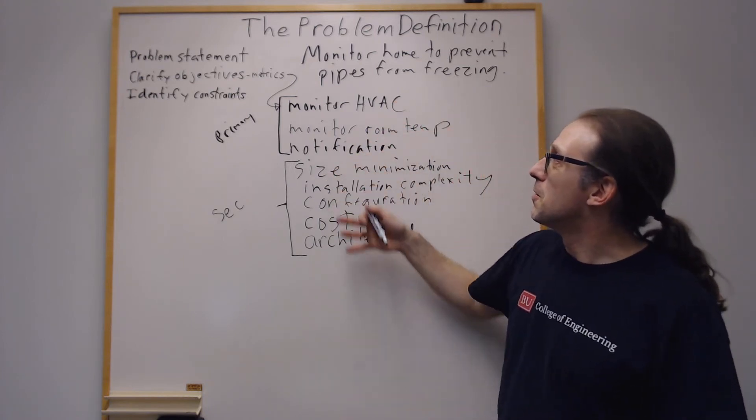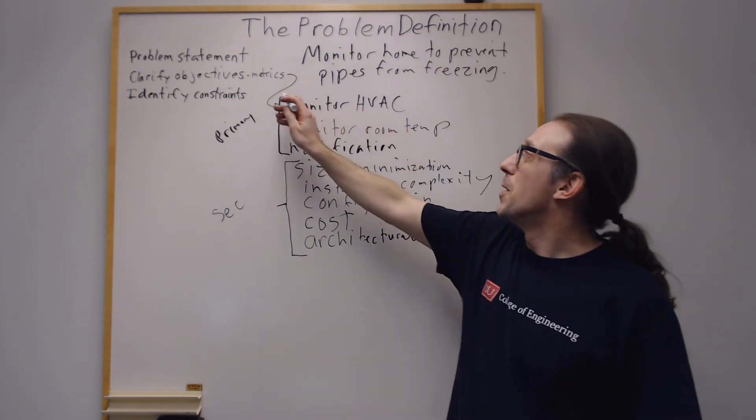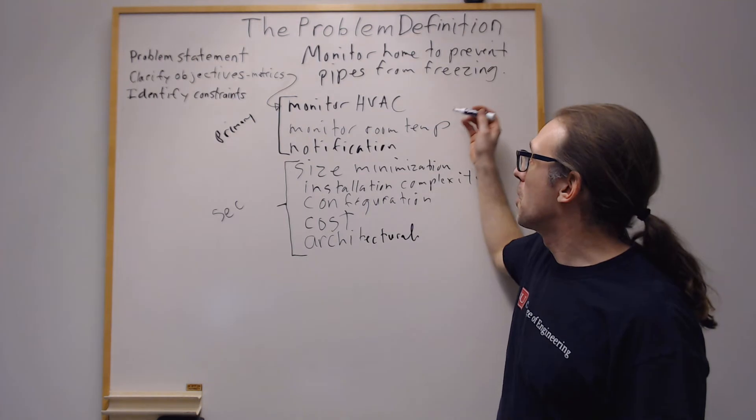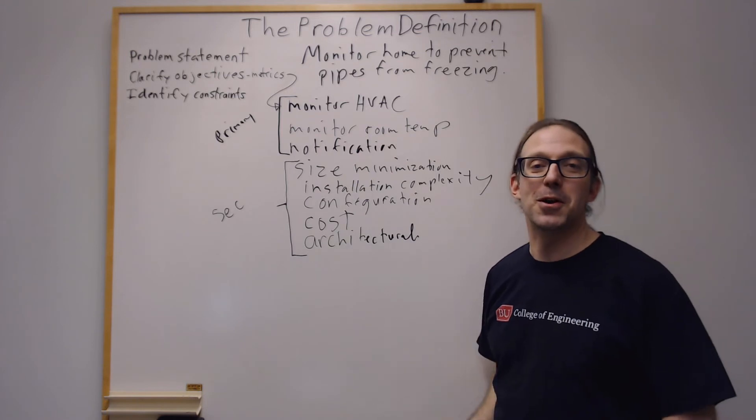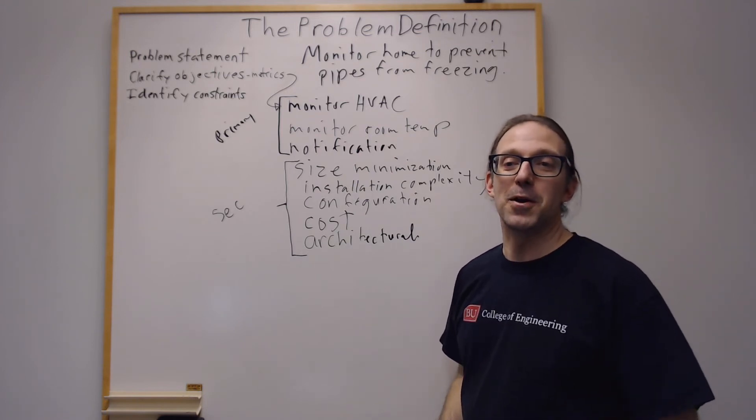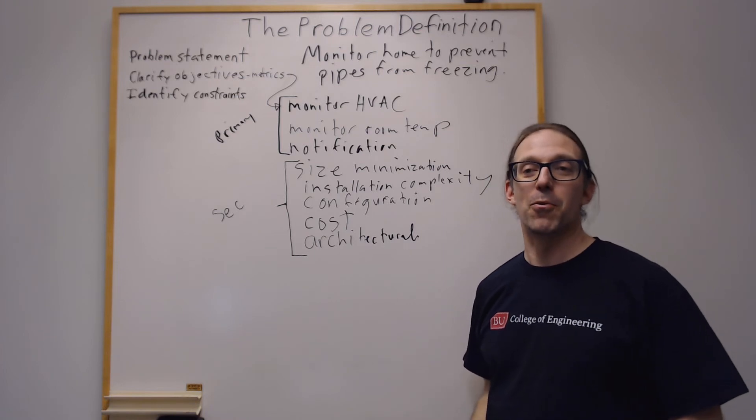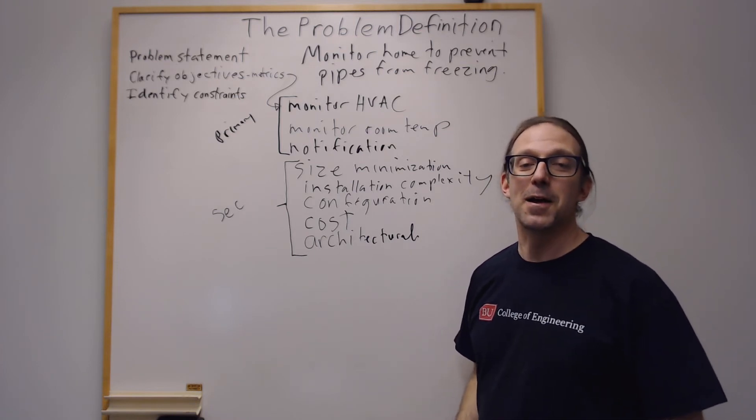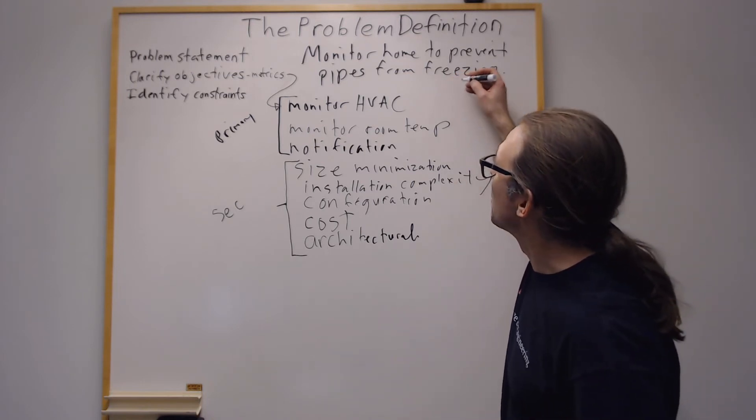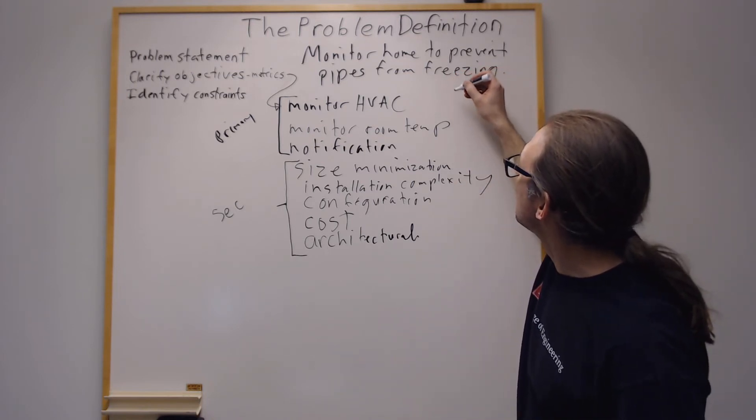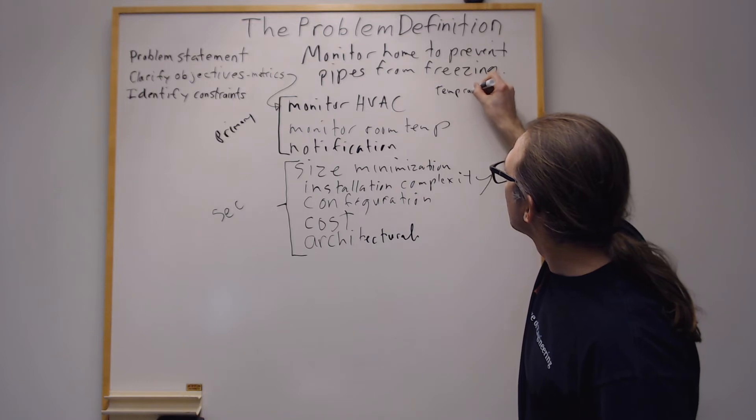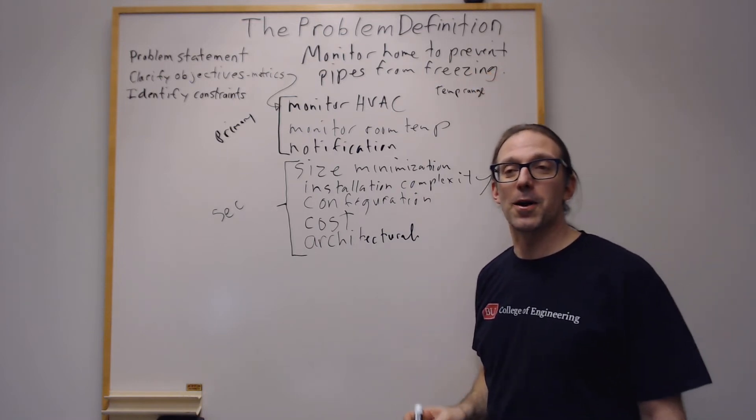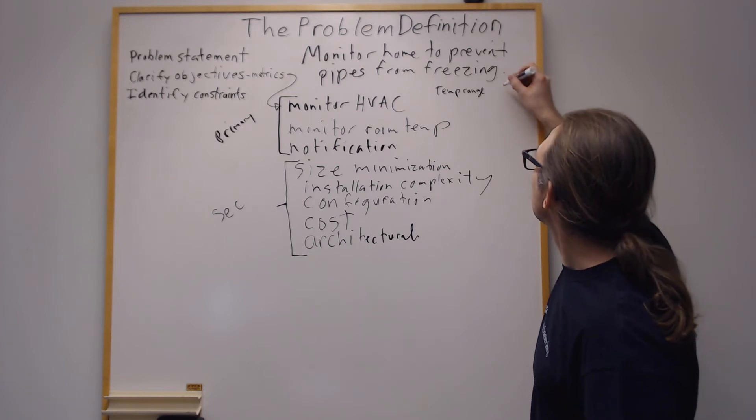So now we have some objectives defined. We want to look at metrics. So metrics usually involve numbers where we want to put a metric on some of these objectives right here. So if you look at monitoring HVAC, what might some objectives be? So an example would be to measure if the system is on. If it's a boiler, is the boiler getting hot? Is the gas firing? And so that might want to monitor the temperature. So we could say the objective would be to make sure the temperature is within a certain range. So say we don't know what kind of system this is, but maybe it needs to be at 100 degrees Celsius.